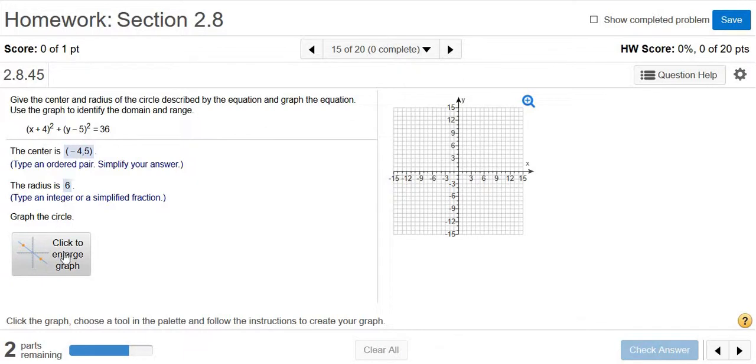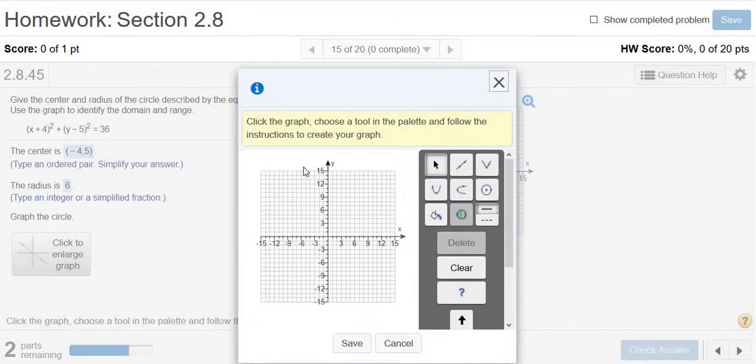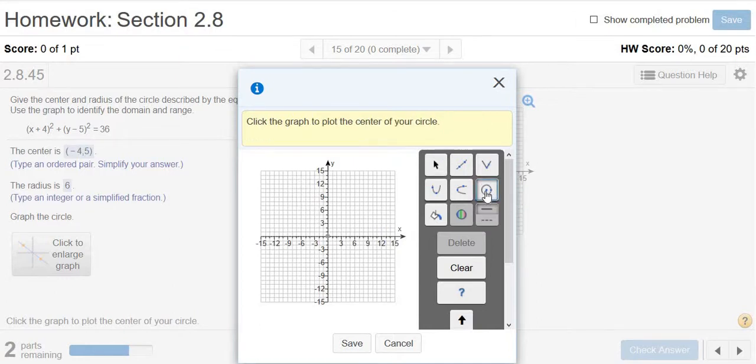It says graph the circle, so I'm going to click this. It says choose a tool, so we're going to choose the circle tool. And then it says click the graph to plot the center of your circle. So the center of our circle is negative 4, 5.